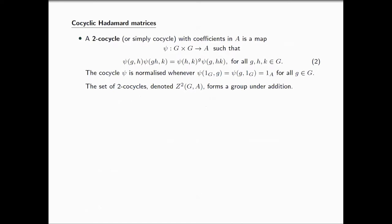What is a 2-cocycle? It is a map from the product G cross G into A, such that it satisfies this equation here in equation 2. We observe here there is this action of G on A. We say the cocycle is normalized whenever we enter the identity in any of the components, the cocycle spits out the identity again. The set of two cocycles forms a group under addition, which we call Z2GA.